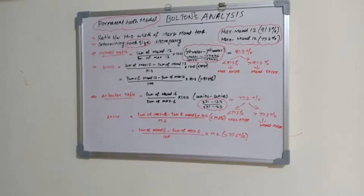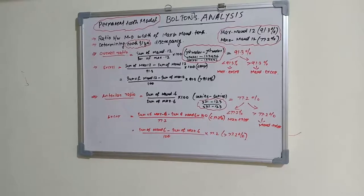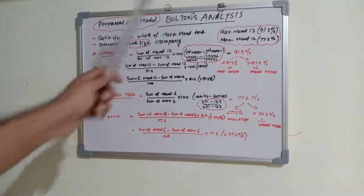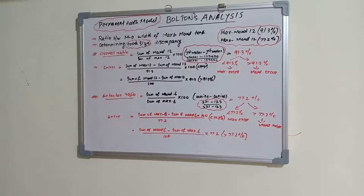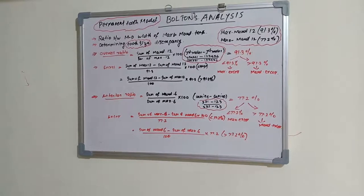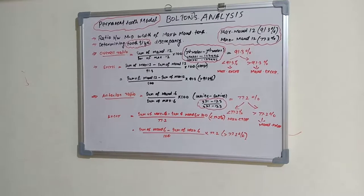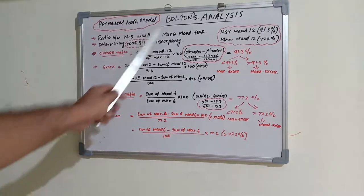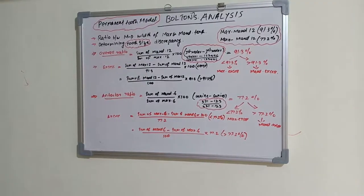We have various model analyses — some are for permanent teeth and some are for deciduous teeth. For permanent teeth, the most important is Bolton's analysis, then Pont's analysis, Ashley-Howe analysis, Carey's analysis, and arch perimeter analysis. For mixed dentition analysis, we have Moyers analysis and Tanaka-Johnston analysis. Now let's start with Bolton's analysis.